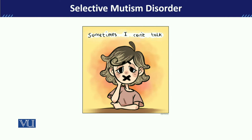Sometimes these children also start expressing sensory sensitivity. Sensory sensitivity means they don't like any kind of touch — for example, the touch of a hairbrush or any other touch. Similarly, they are very picky in eating different types of food. Additionally, if someone touches them, they tend to misinterpret that sensation. So some children with selective mutism also present with these kinds of sensory challenges.